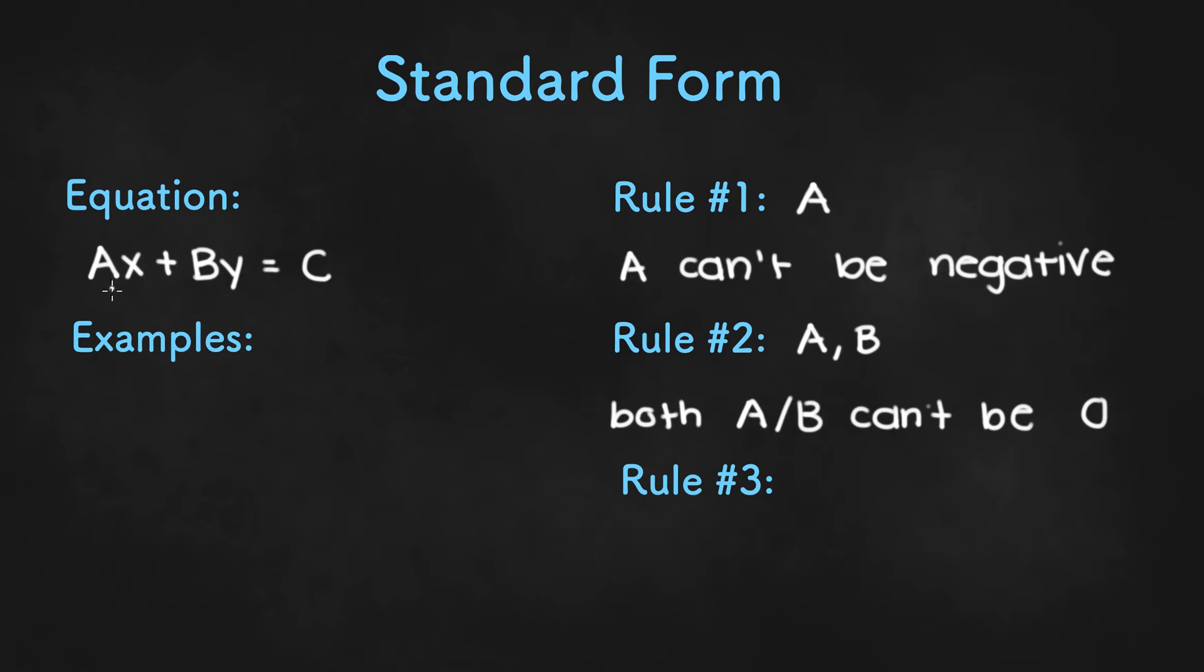So if A were 0, then this whole term would be equal to 0 and we would be left with By equals C, which is still in standard form. And if B is equal to 0, this whole term would be 0 and we would be left with Ax equals C, and that would still be standard form.